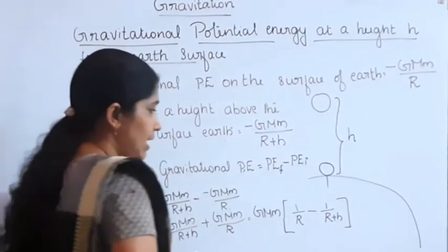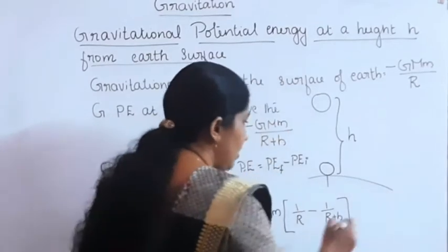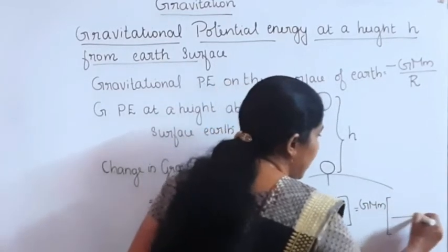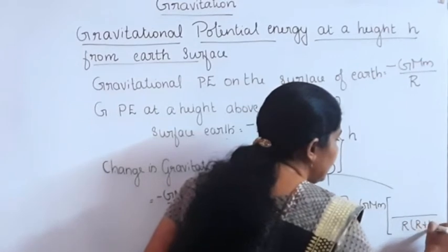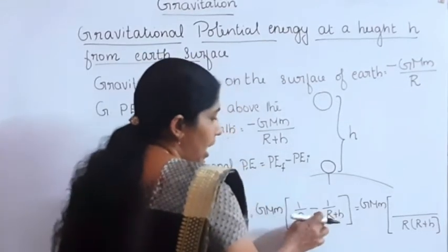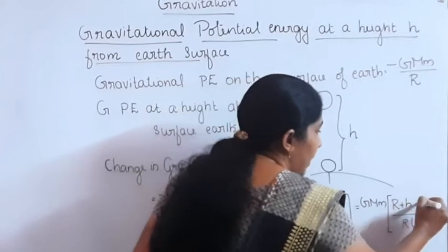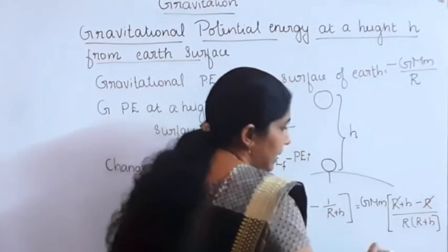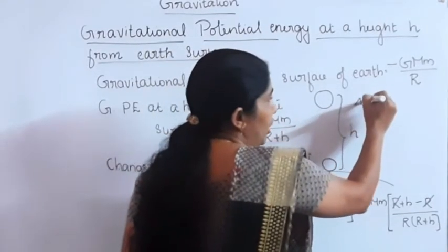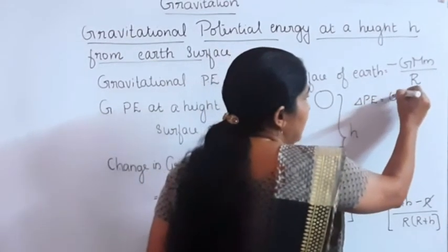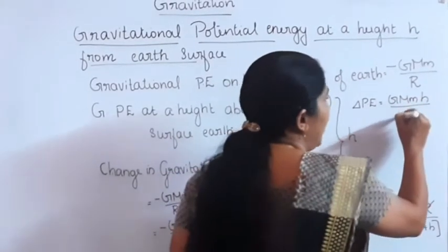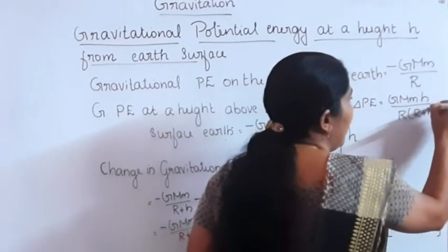On solving further, taking the common denominator R into R plus h, the numerator becomes R plus h minus R. The R terms cancel, leaving h. So the change in potential energy is equal to GMmh divided by R into R plus h.